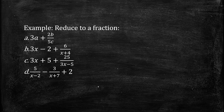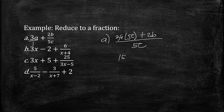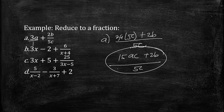Let's look at example A — how to reduce it to a fraction. We consider 3a as 3a over 1. The LCD is 5c. So 5c divided by 1 gives 5c times 3a, which equals 15ac, plus 2b. The result is 15ac plus 2b over 5c.